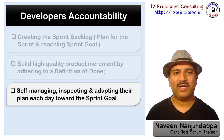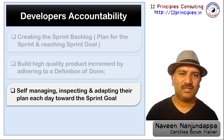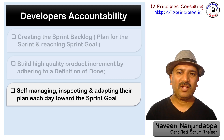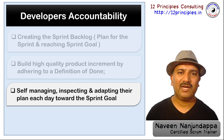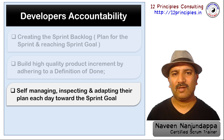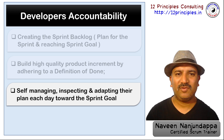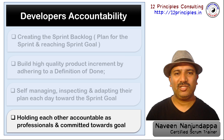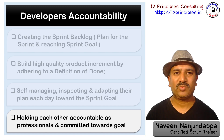The team members self-manage their work. They inspect and adapt their plan every day towards the sprint goal, so that if there are any corrections that need to be done during the sprint, they would go ahead and inspect and adapt, making the necessary changes to reach the goal. The sprint backlog can be changed anytime during the sprint and the developers own it. The team members hold each other accountable as professionals for everything that is done during the sprint and towards the sprint goal.